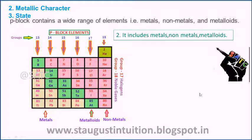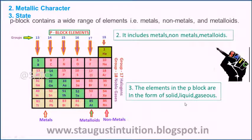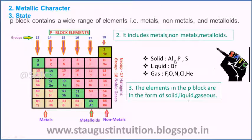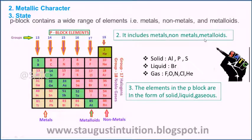P-Block includes metals, non-metals, and metalloids. The elements in the P-block are in the form of solid, liquid, and gas. For example, solid state includes Aluminum, Phosphorus, Sulfur; liquid includes Bromine; and gases include Fluorine, Oxygen, Nitrogen, Chlorine, and Helium.